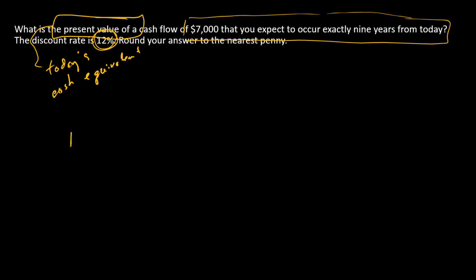Let's start with the timeline. Nothing happening at all until year nine, and in year nine there is $7,000 - think of that as an inflow, something that you might receive. This present value that we're trying to find is as of today, or time zero.